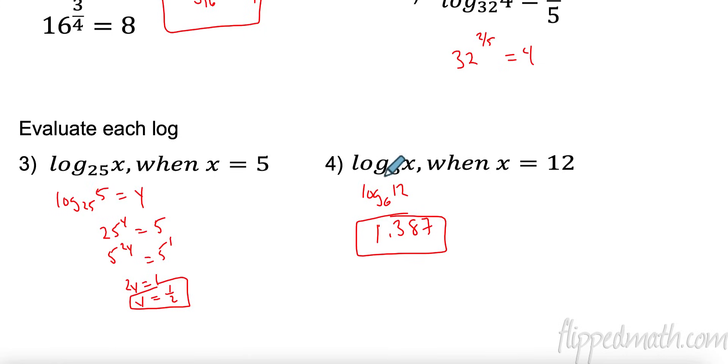Over here, I can't find that exact, so I put in my calculator. I did log base 6 of 12, and I got 1.387. That's it for today. It should be a pretty quick lesson. Best of luck to you. Don't forget to go out there and dream big. See you next time.